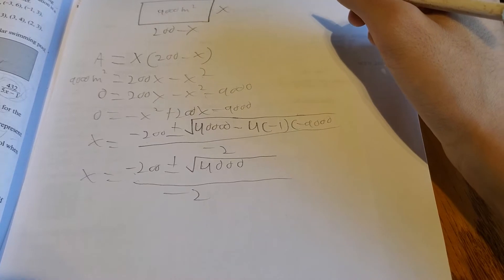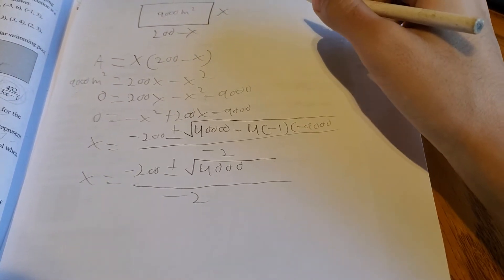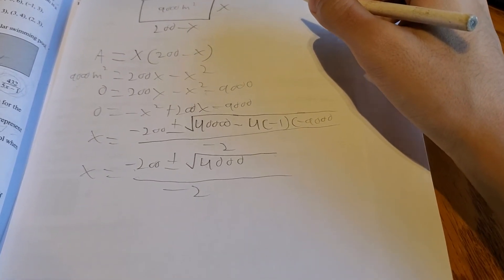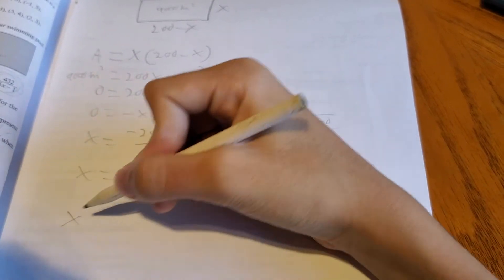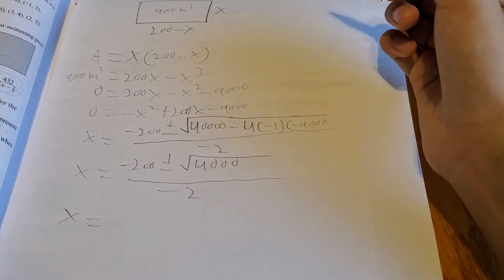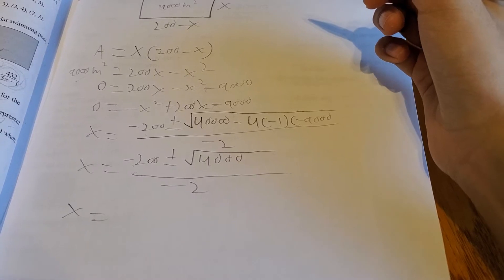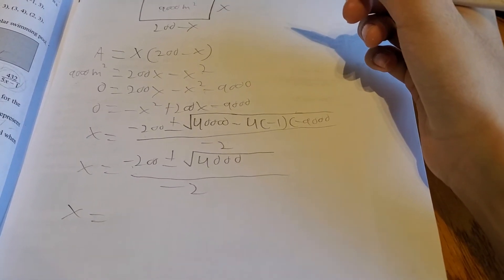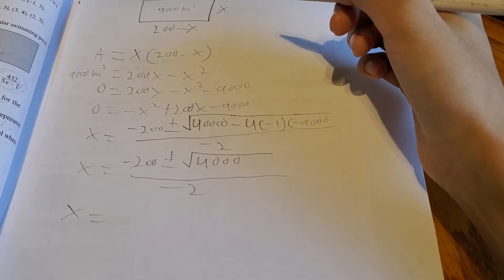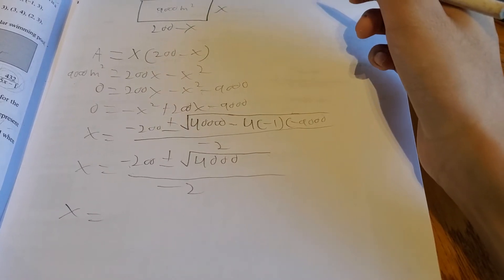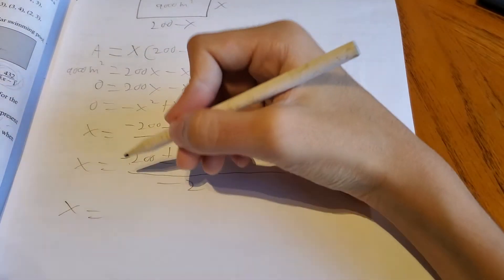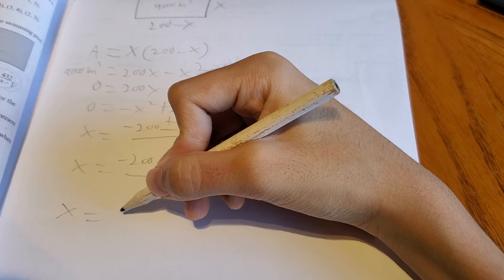So now we can solve for the two values of x. X can be if you use the plus sign, it will be 131.6.